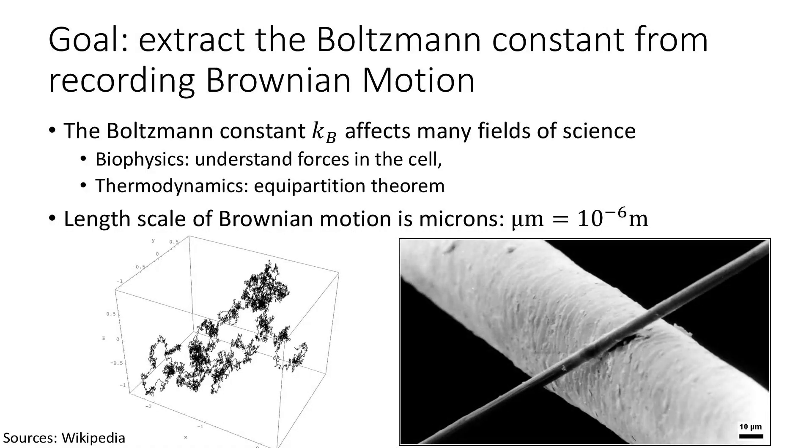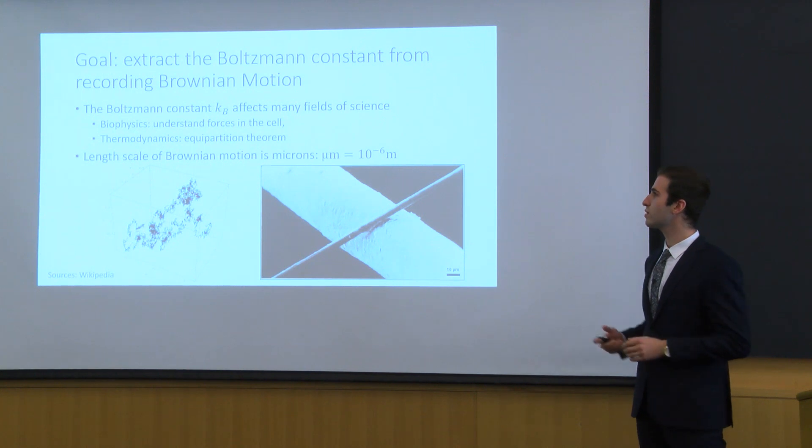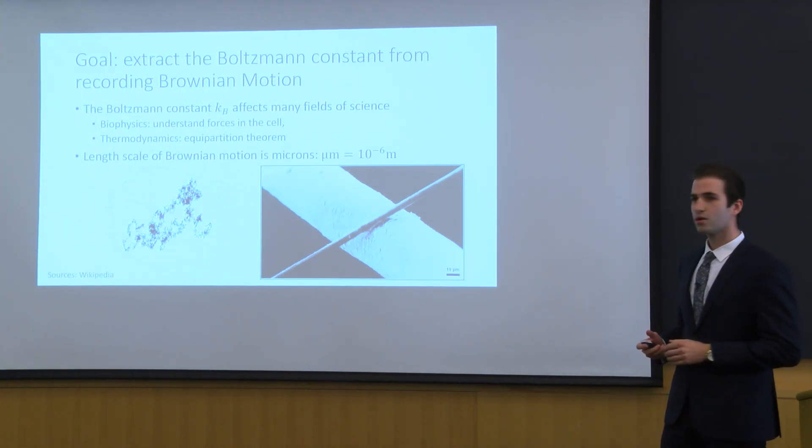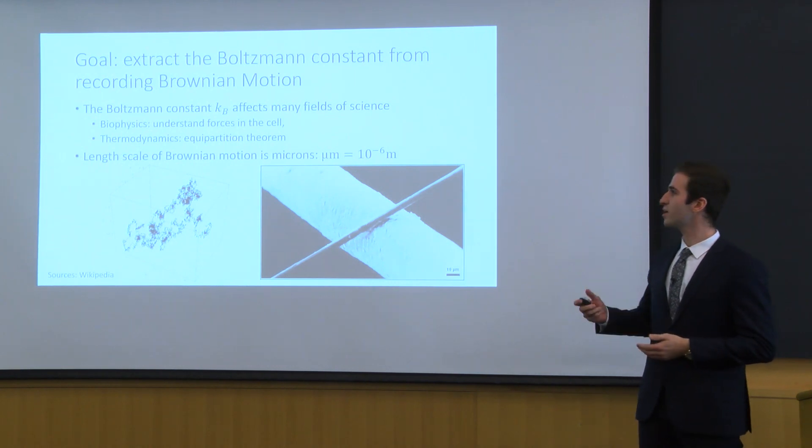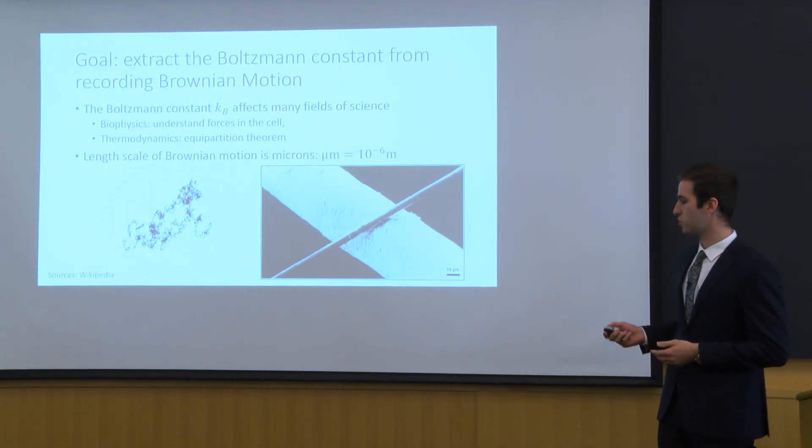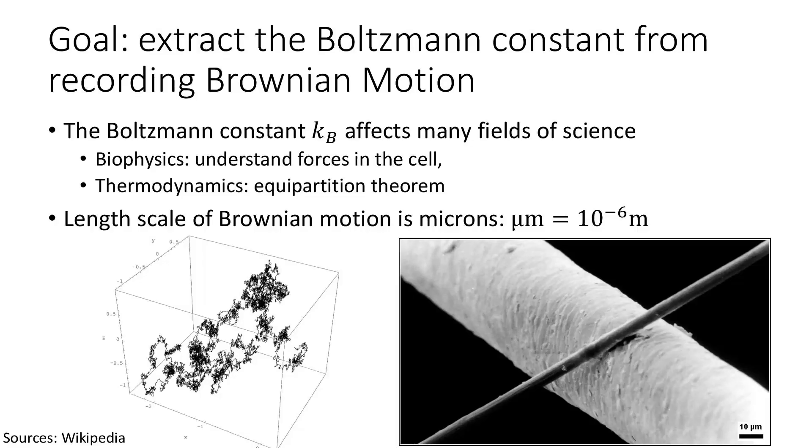The goal of the lab is to extract Boltzmann's constant out of Brownian motion, and there are two key components to think about. First one is the Boltzmann's constant which is prevalent in different types of science, for example we can have it in biophysics where people use the Boltzmann's constant to try to understand forces in a cellular level. We have it in thermodynamics with the famous equipartition theorem.